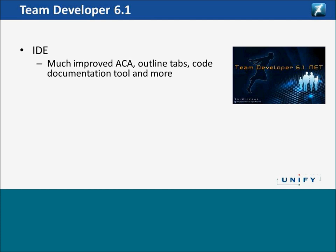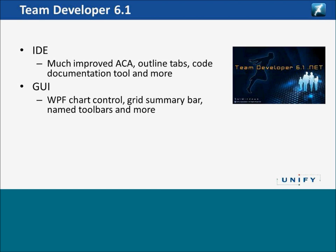TeamDeveloper 6.1 IDE: much improved active coding assistant, totally rewritten to perform at high speed even with very large applications. Outline tabs — you will see in a moment what that is; it has been requested by customers and is implemented in 6.1. We have a new code documentation tool and a lot more on the IDE. On the GUI side, a WPF charting control — and that WPF doesn't mean it's only for .NET; this new control is available for both Win32 and .NET. We have a new grid summary bar and named toolbars.